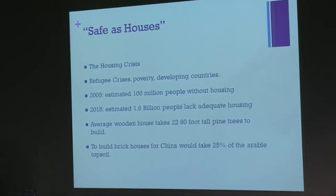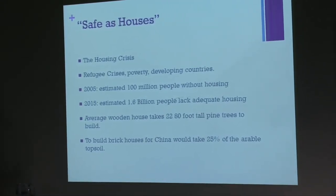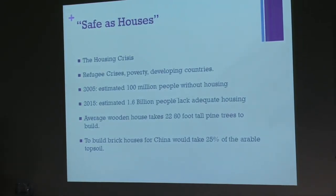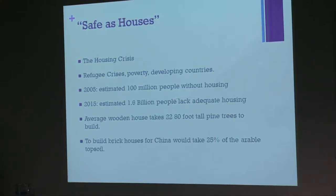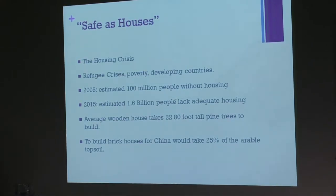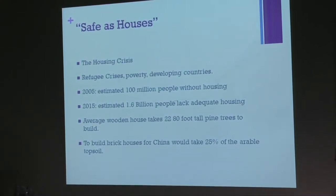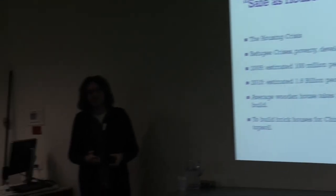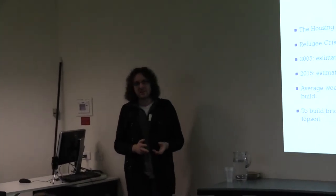So we need an alternative that doesn't involve eating up topsoil, killing trees, or cooking bricks at 1000 degrees for 7 days. That's what you actually have to do to make a red clay brick — heat it in a kiln at 1000 degrees for 7 days — and that's a lot of energy.